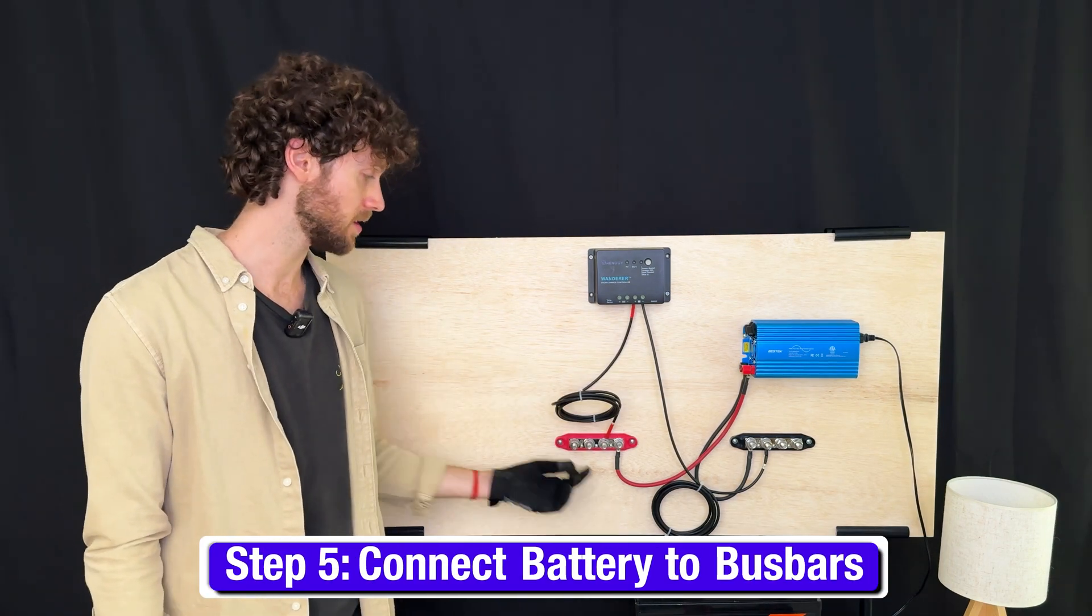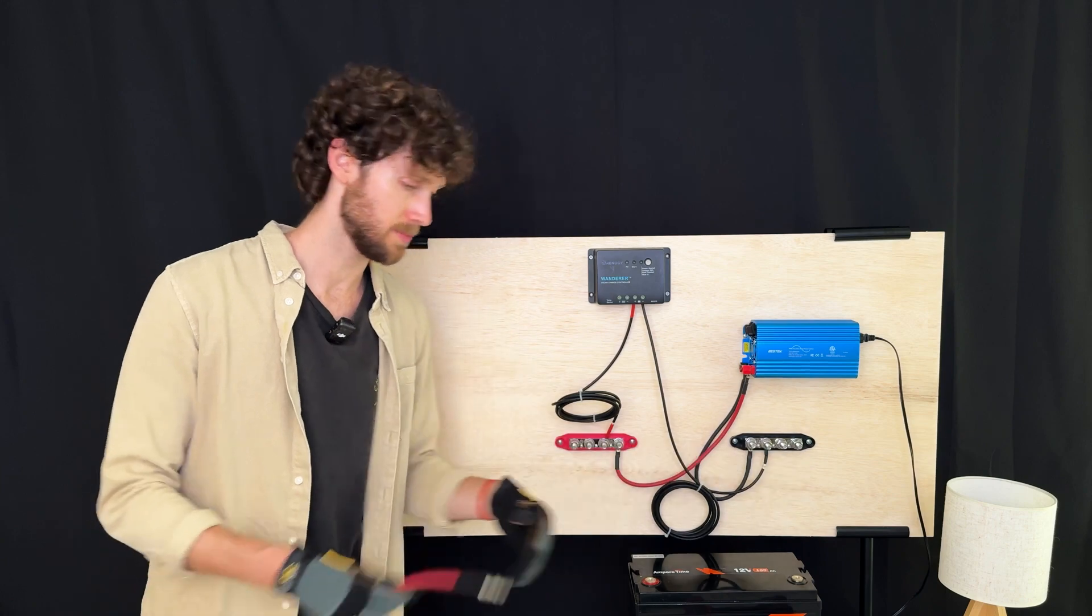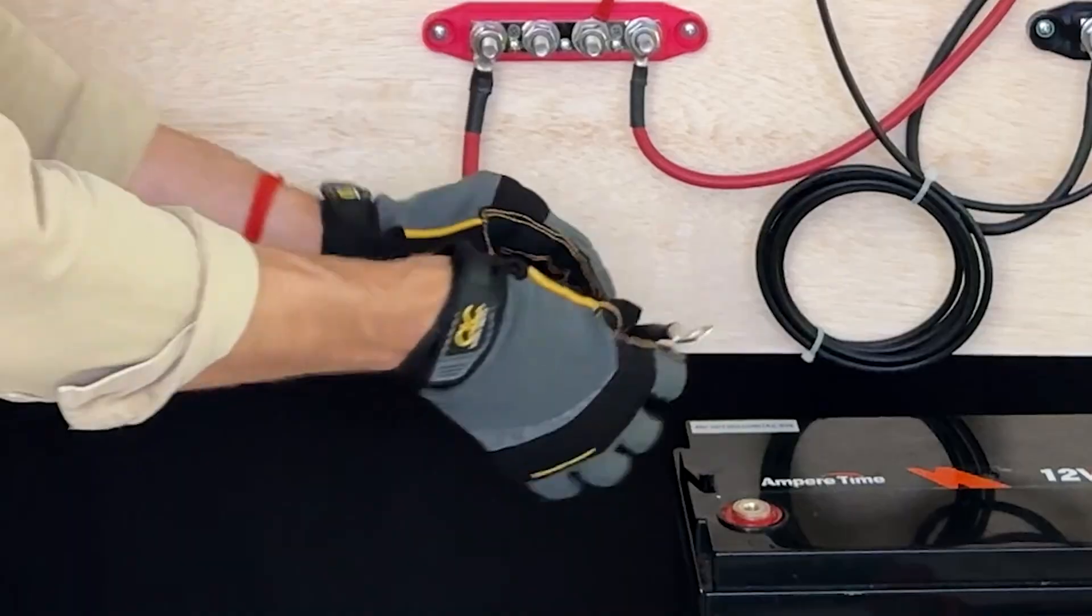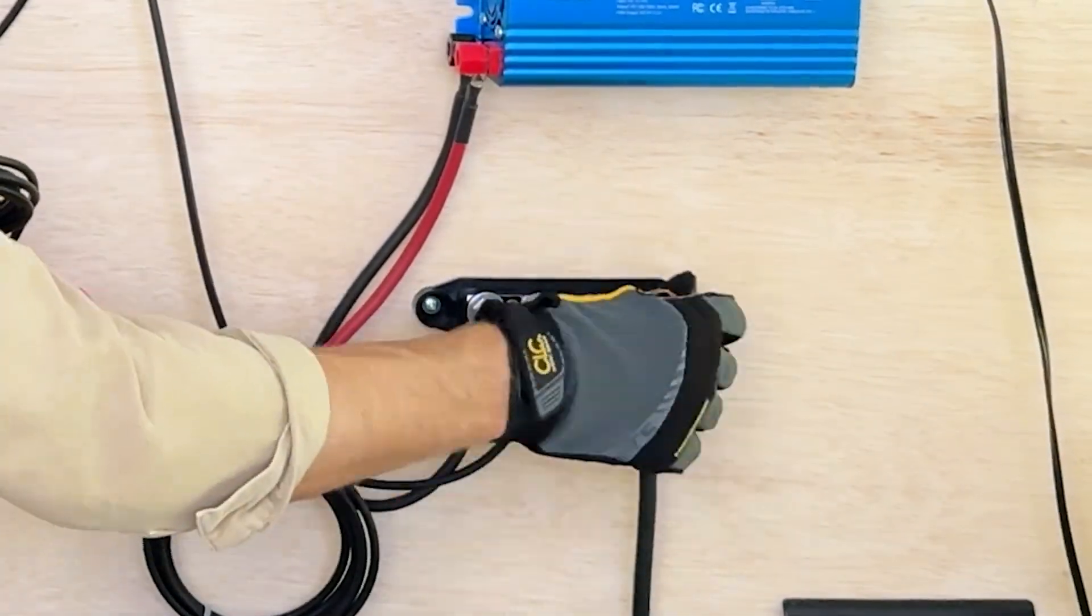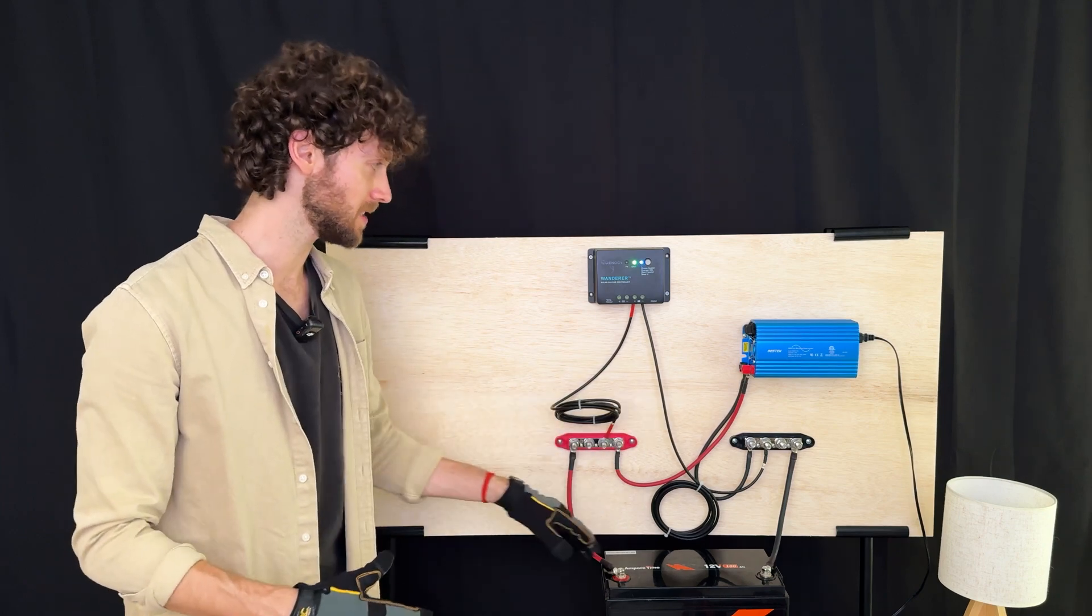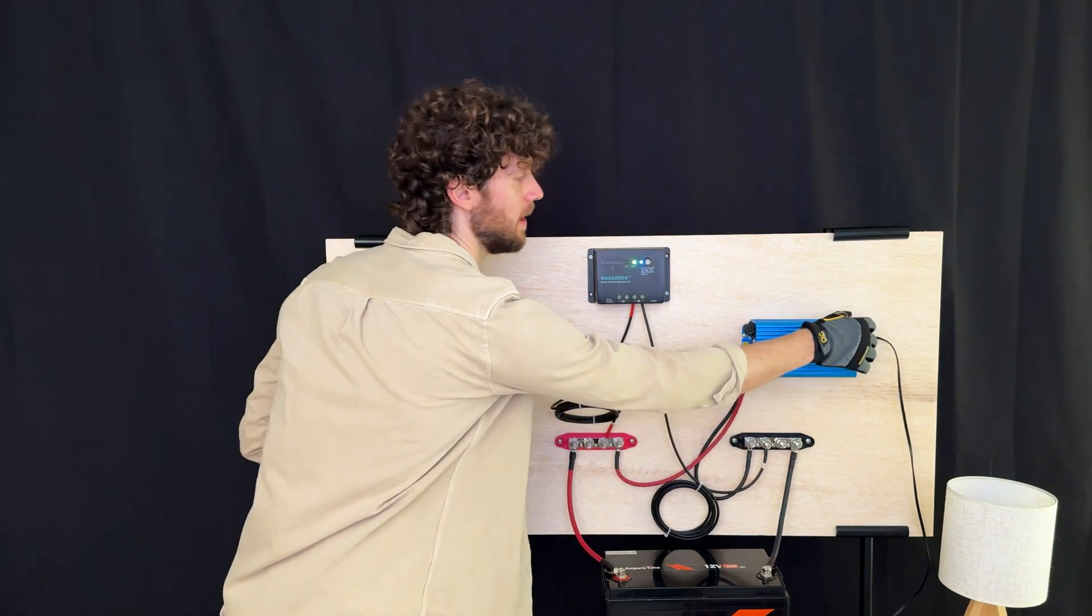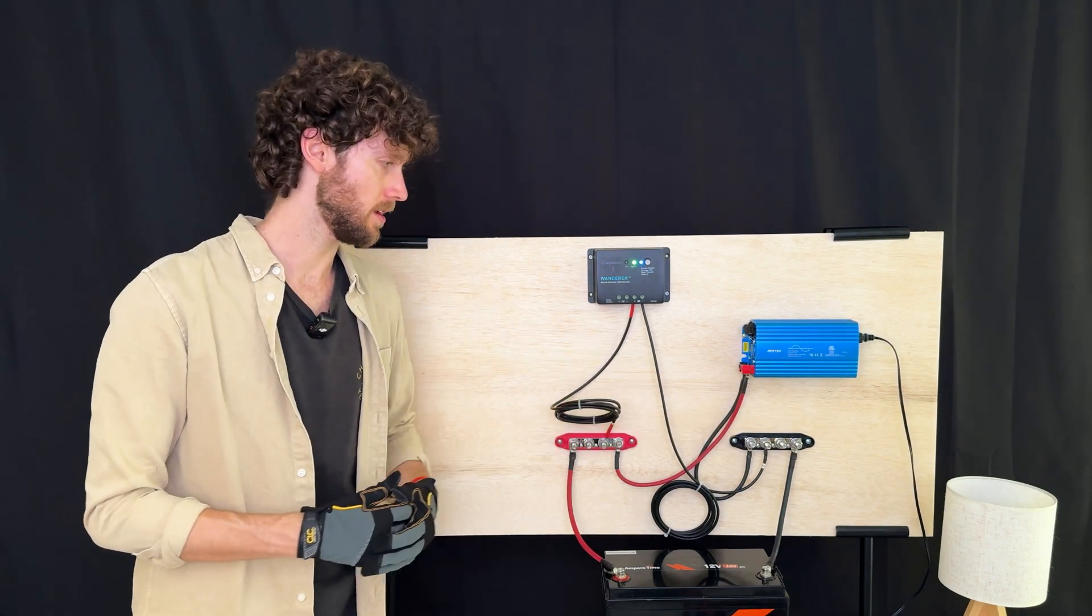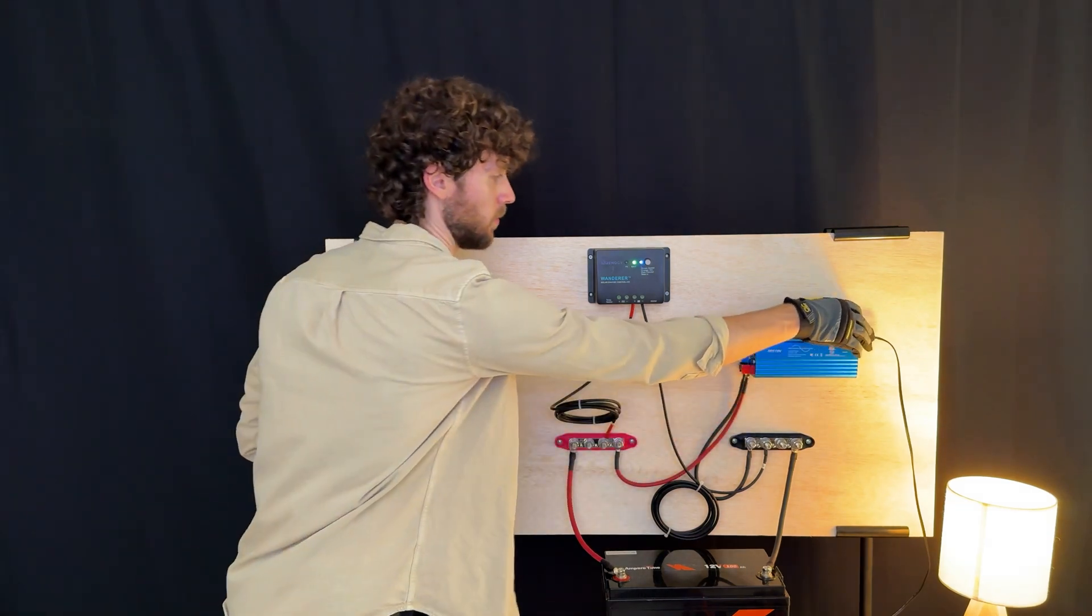Now we're going to connect the positive battery terminal to the positive bus bar and the negative battery terminal to the negative bus bar using those battery cables. Now that the battery has been connected to the positive bus bars, you can see the charge controller turns back on because it has power. And let me switch the inverter on to check. This light should turn on in just a second. There you go. So the inverter also has power and is working.